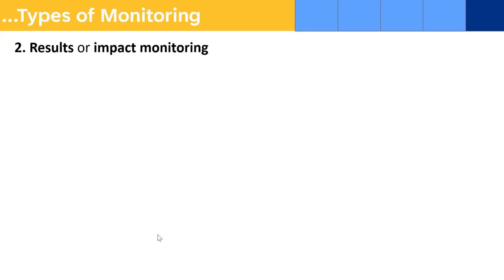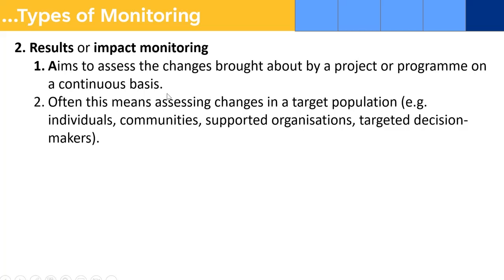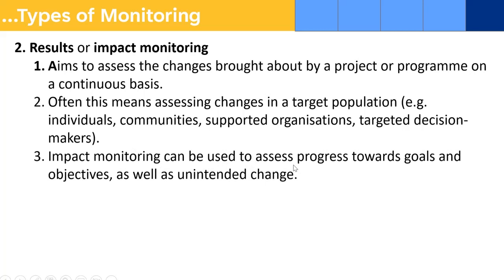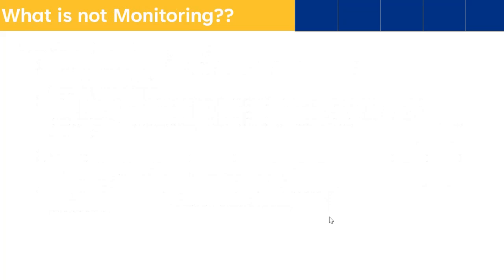The next type is result or impact monitoring. It aims to assess the changes brought about by a project or program on a continuous basis. This often means assessing changes in a target population, communities, targeted organizations, and targeted decision makers. Impact monitoring can be used to assess progress towards goals and objectives. It is a type of evaluation, but it is different from evaluation because evaluation is done at a specific time, while this is monitoring done continuously. Here the focus is on the results.